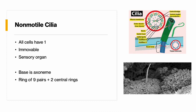The base of the cilia is an axoneme, which is composed of a ring of nine pairs with two single rings in the middle. We went over the structure of the cilia last week, but here's another picture to refresh what the inside of it would look like.